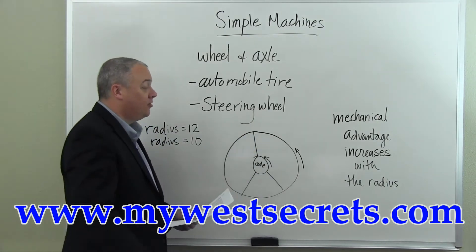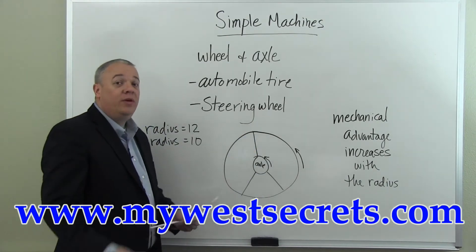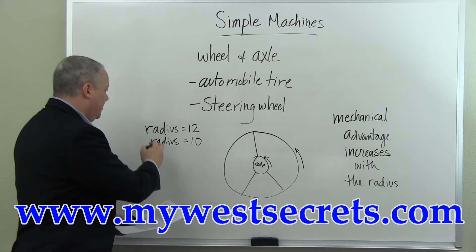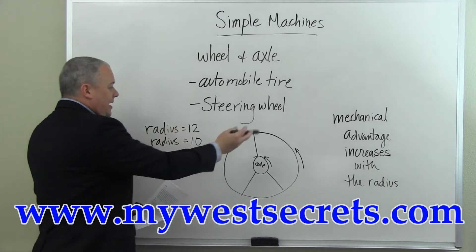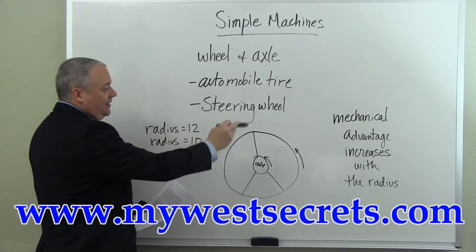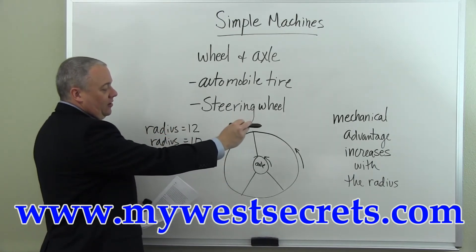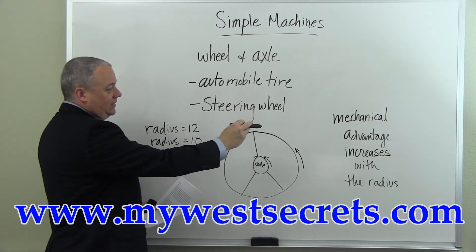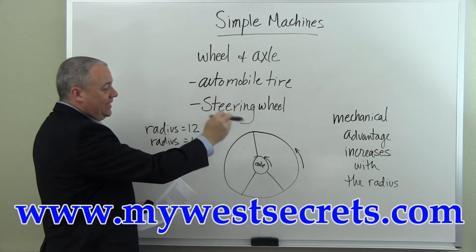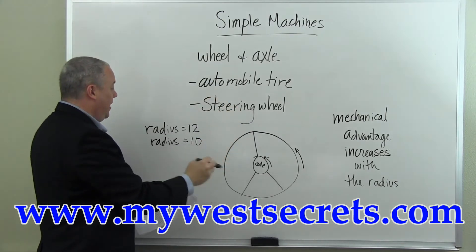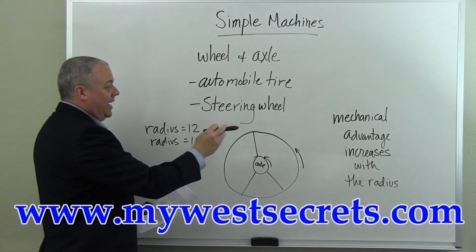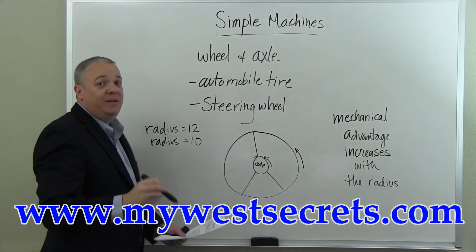The mechanical advantage increases with the radius. For example, if we have a radius of 12 versus a radius of 10, the mechanical advantage is greater with the larger radius. A bigger radius of 12 means greater mechanical advantage.